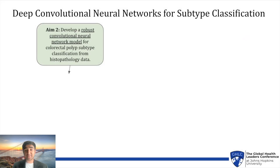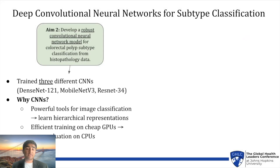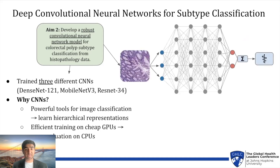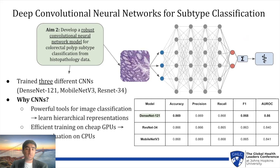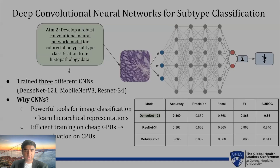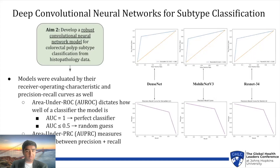I then focused on developing a robust deep convolutional neural network model for colorectal polyp subtyping. I trained three different models that were fast to train and evaluate, which is crucial for global health, as AI models must perform quickly and efficiently in high-stakes environments. After training, I evaluated their performance using multiple metrics including accuracy, F1 score, and AU ROC. An AU ROC value of 1 indicates a perfect classifier, while 0.5 indicates performance equivalent to a random guess. I also plotted AU PRC and ROC curves to examine the precision and recall trade-offs of my model.